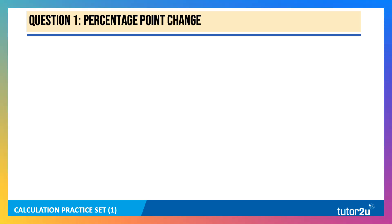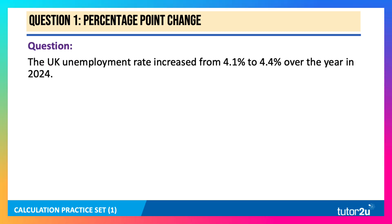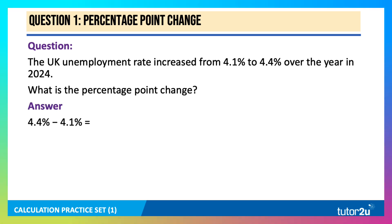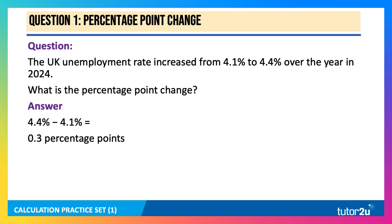First question is on percentage point change. The UK unemployment rate increased from 4.1% to 4.4% over the year in 2024. What is the percentage point change? This is on the specification — it's not percentage change, it's percentage point. The answer is 4.4% minus 4.1%, giving 0.3 percentage points, which represents a share of the labour force.